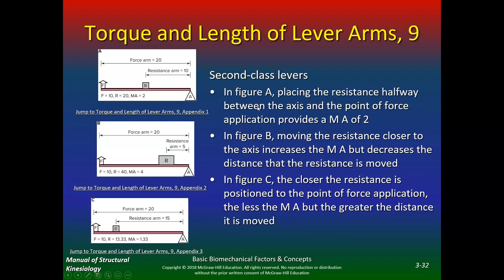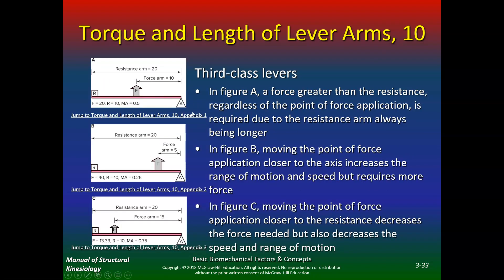For second class levers: balancing the resistance halfway between the axis and the point of force application provides a mechanical advantage of two. If you put the resistance closer to the axis and increase the arm, the mechanical advantage becomes four. If you extended the wheelbarrow arms even further, you could lift four times as much versus if the load were in the middle. Third class levers, the most common in the body, never achieve a mechanical advantage of one — the body is not very efficient.